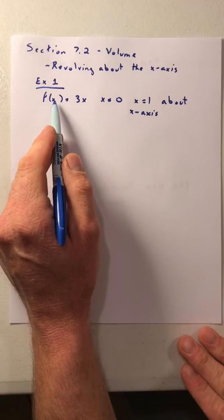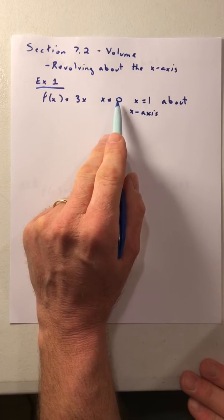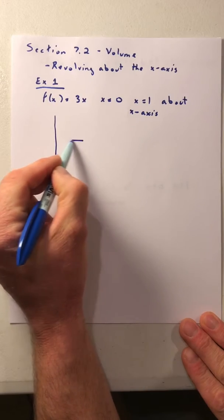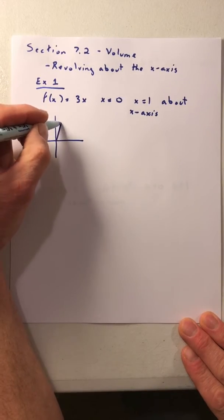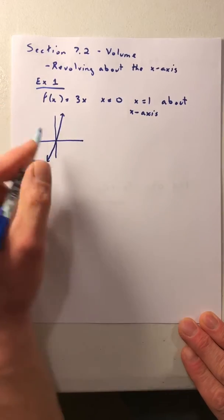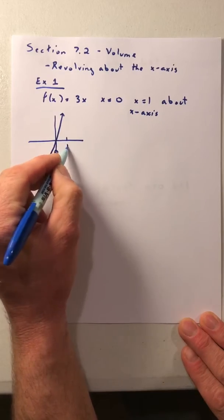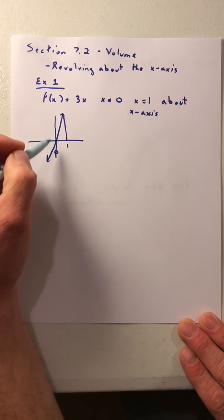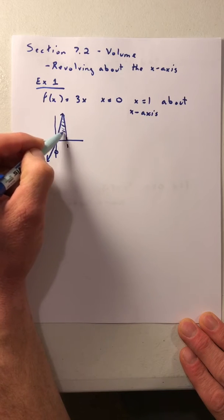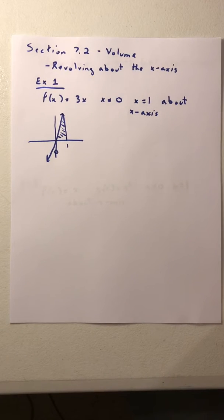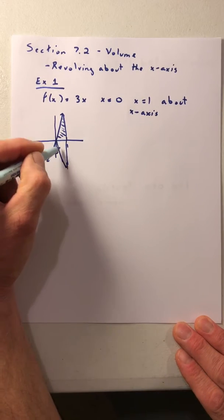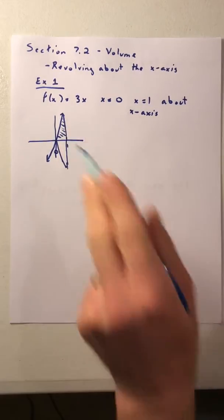In example one we're given f(x) = 3x, with x = 0 and x = 1, and we revolve this about the x-axis. Drawing this on a two-dimensional plane, f(x) = 3x is a linear function. The bounds x = 0 and x = 1 are vertical lines, so the figure we're revolving is just a triangle. Taking that triangle and revolving it very quickly produces a cone.